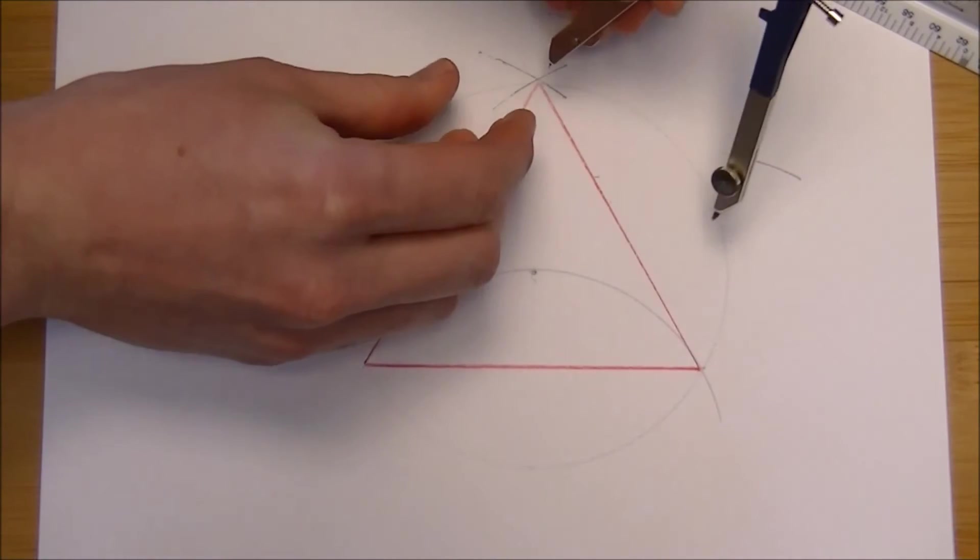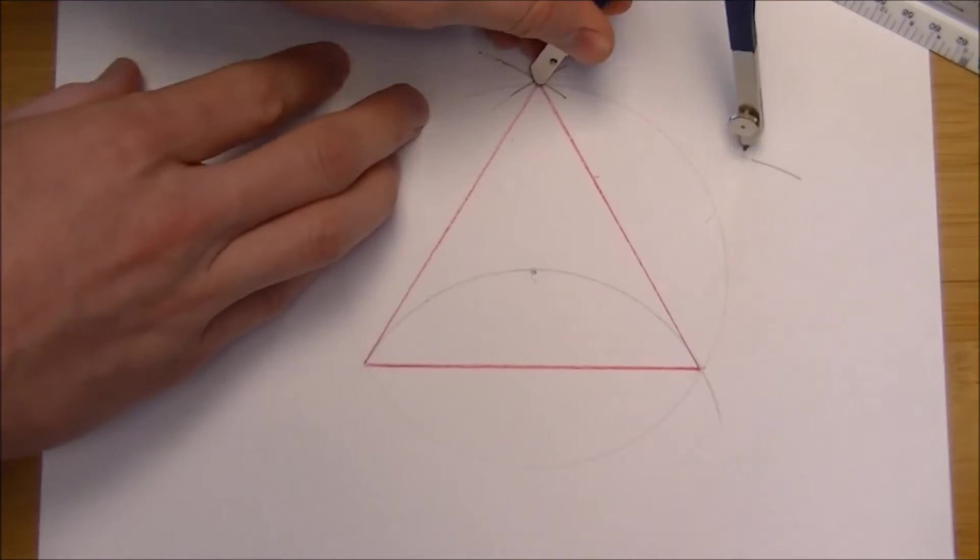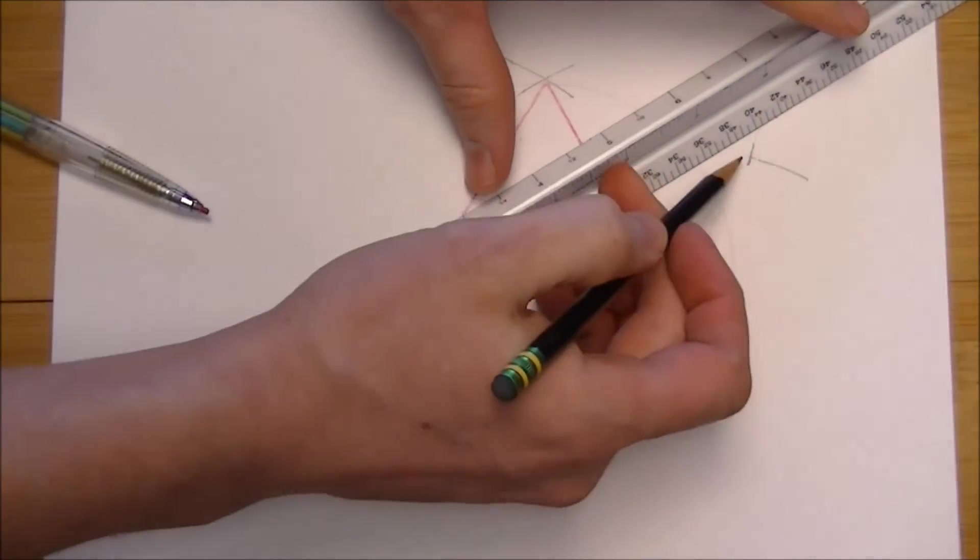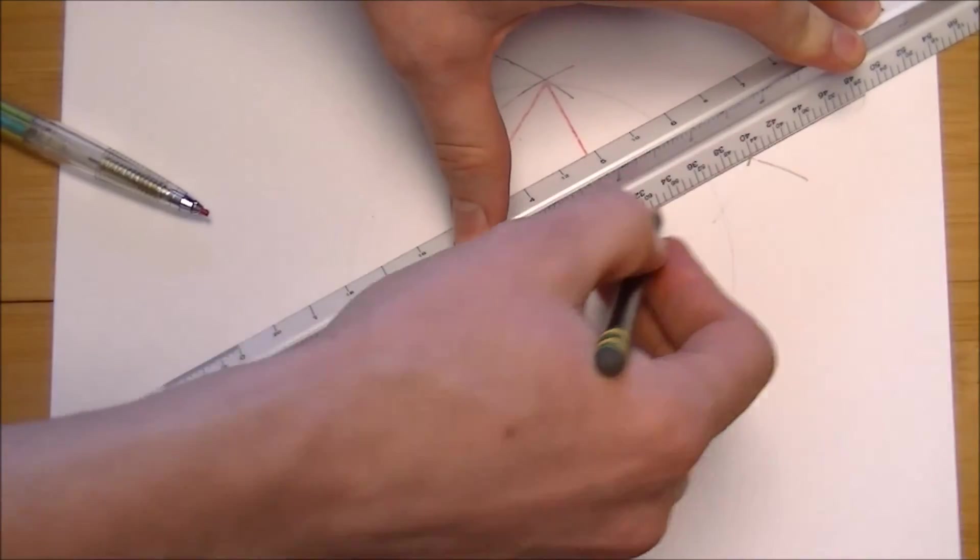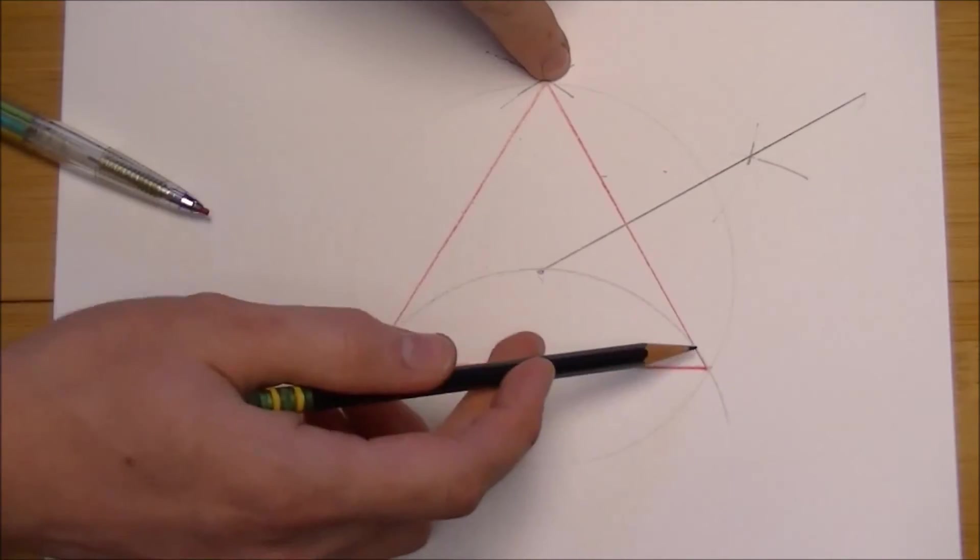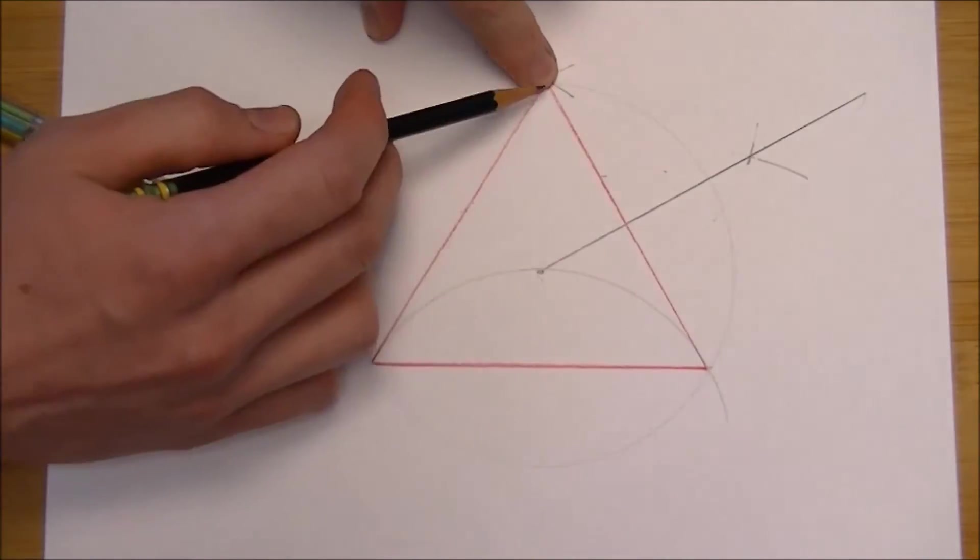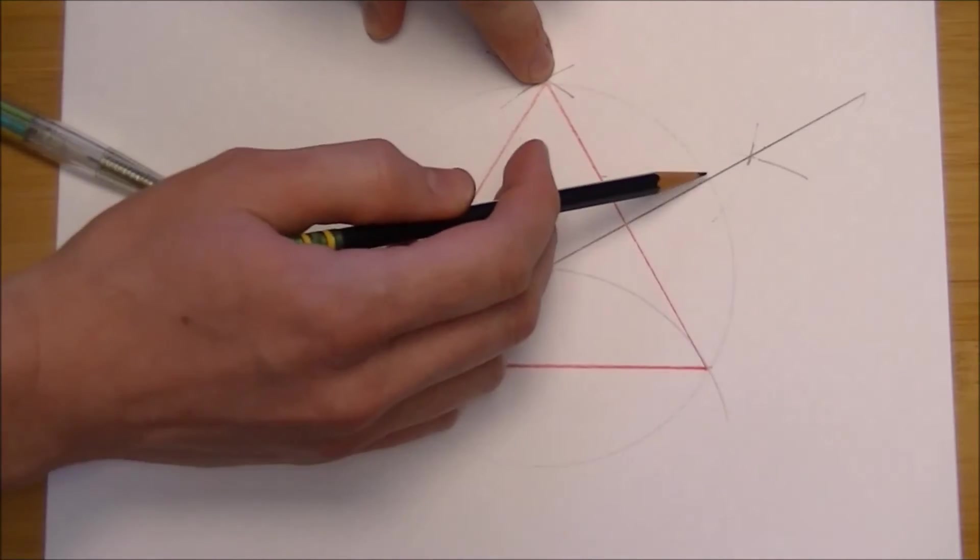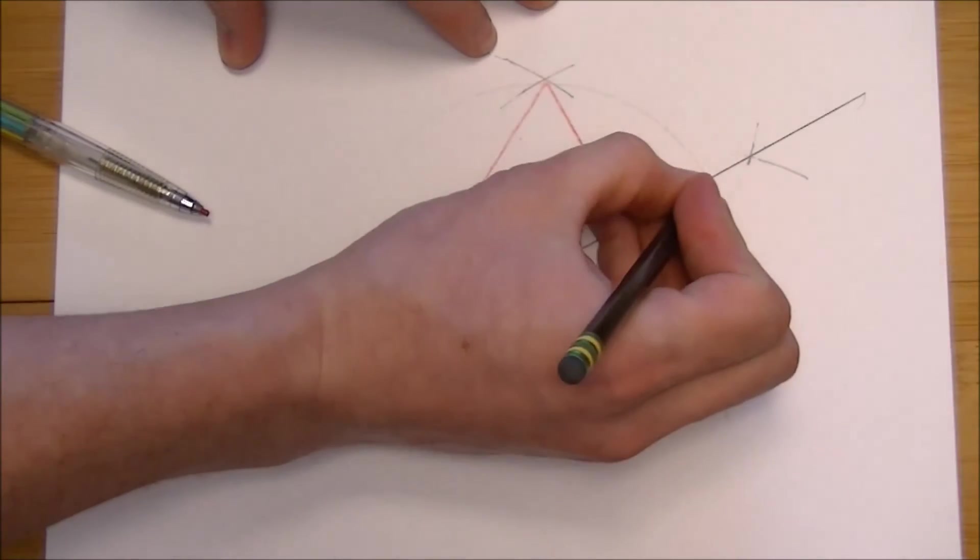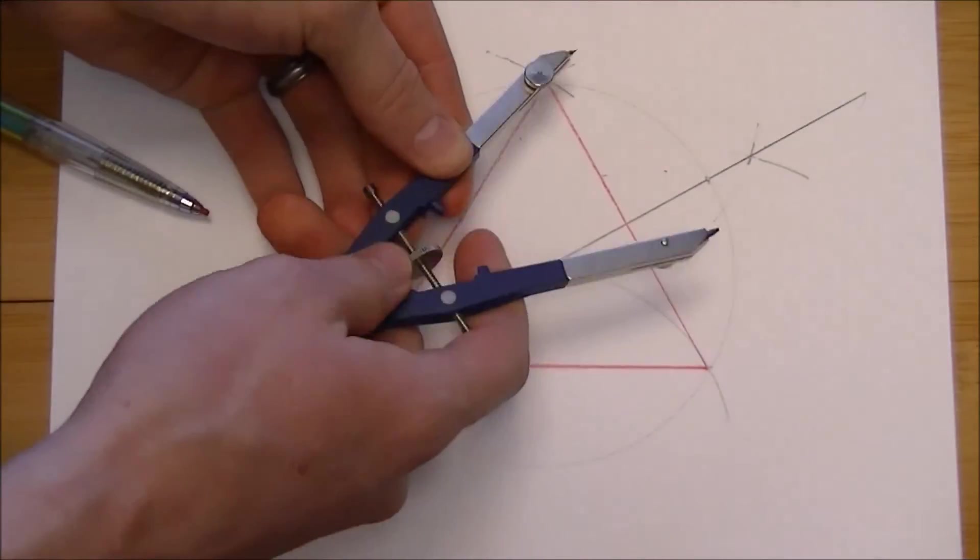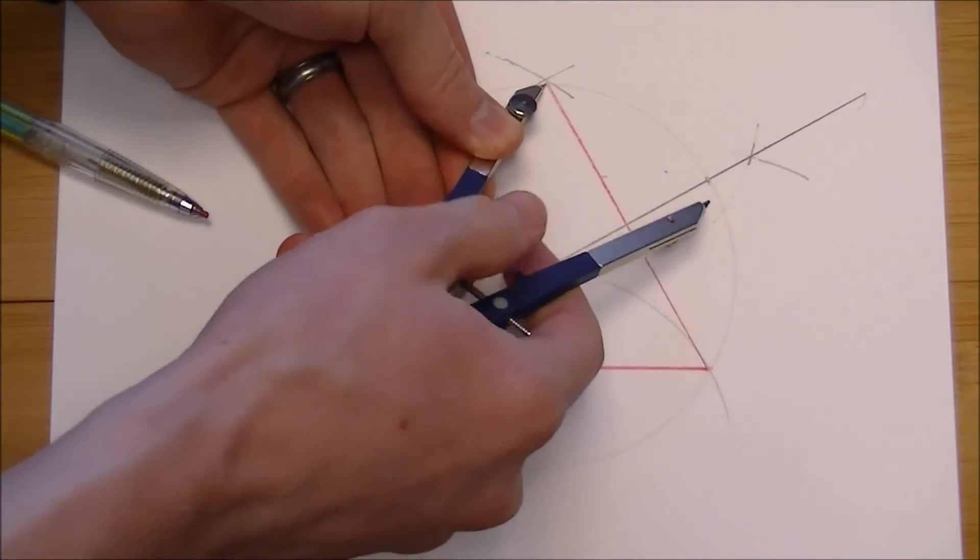So I'll go out from there, out from there, and then I'm going to draw my mark straight from the point where these arcs intersect into the center of the circle. That bisects this line segment here. And by bisecting this line segment, I've also bisected this arc here, and given us a point. And that will be the length of all the sides of our hexagon.